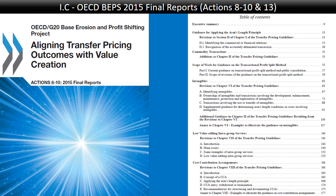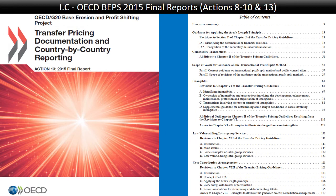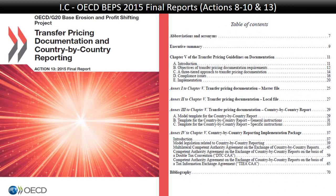Let us look at Action 13. Here is the final report and its table of contents. As discussed when covering Chapter 5 of the OECD transfer pricing guidelines, the objectives of transfer pricing documentation are: the taxpayer should show it thought about its own transfer pricing policies; it allows tax authorities to make a risk assessment of which companies to audit for transfer pricing; and it should give first-level information to tax authorities for conducting an audit.